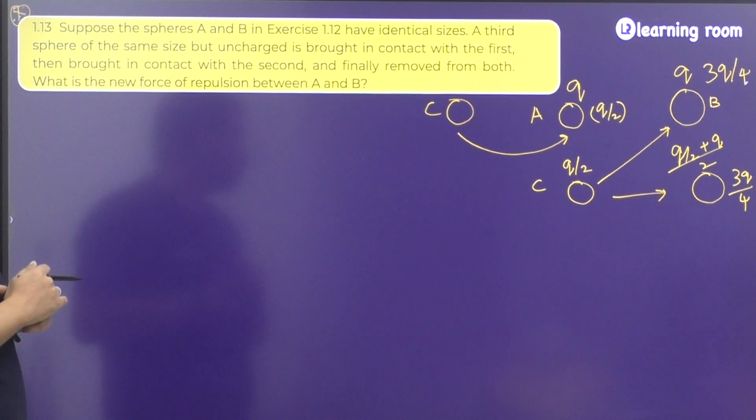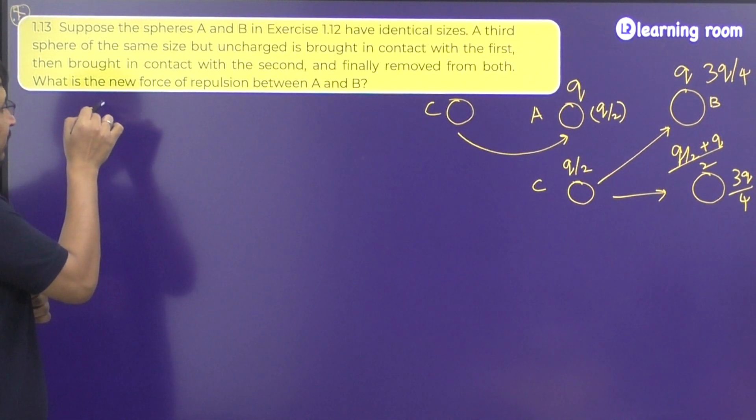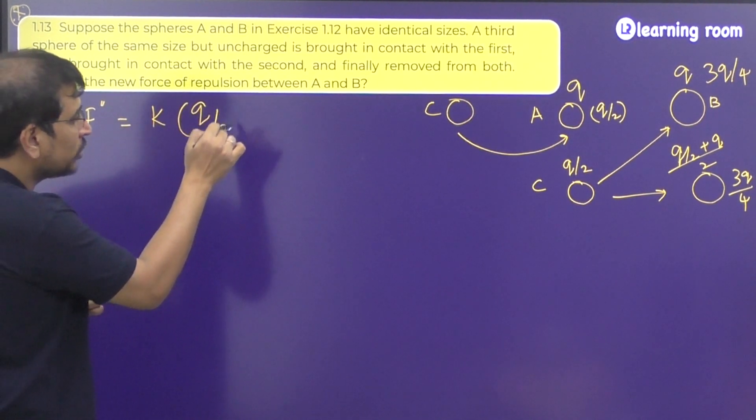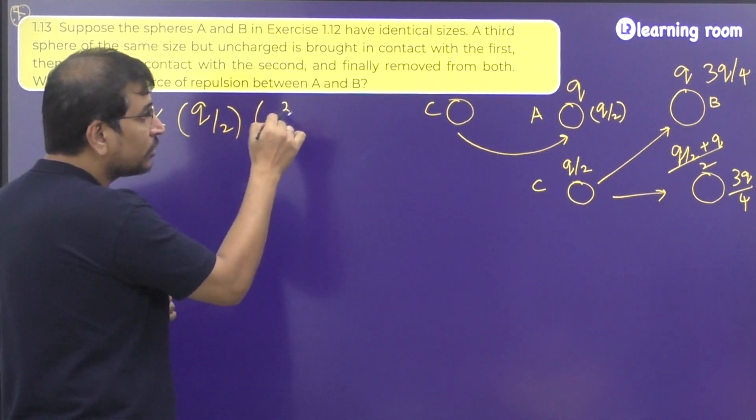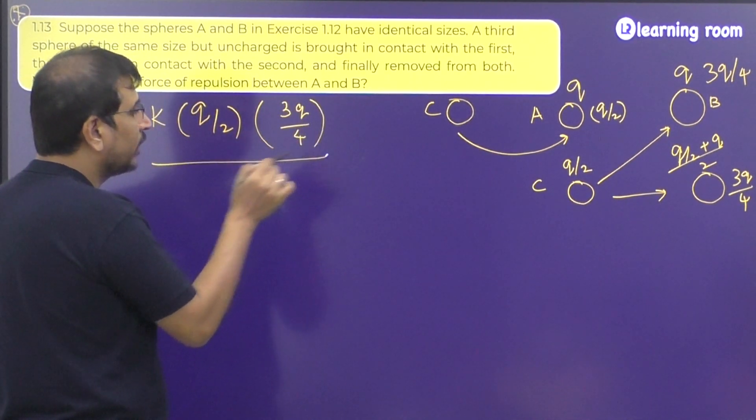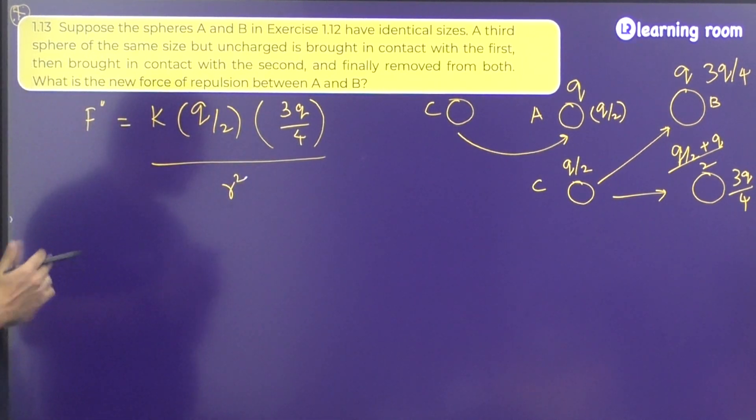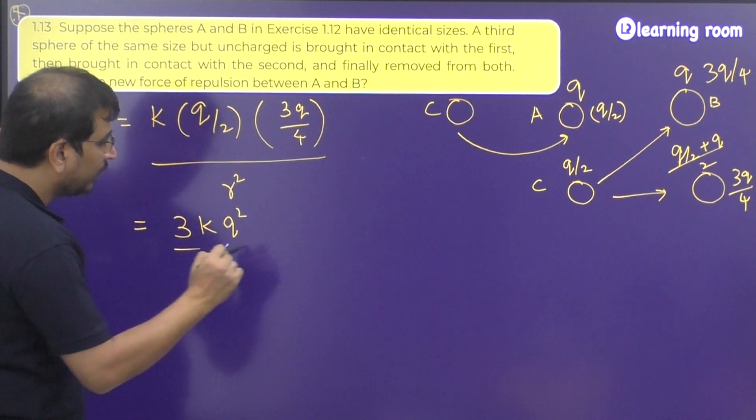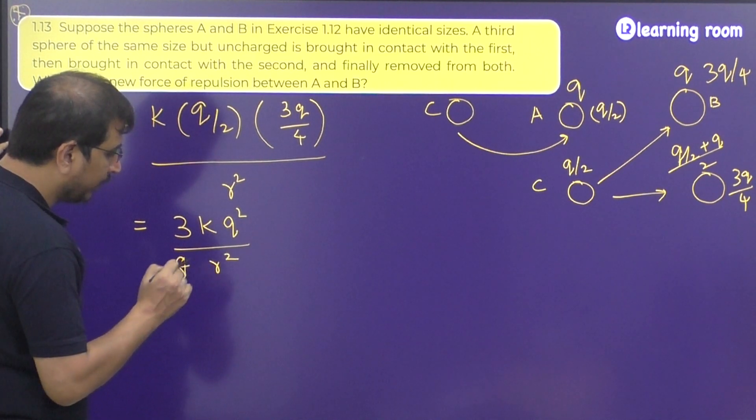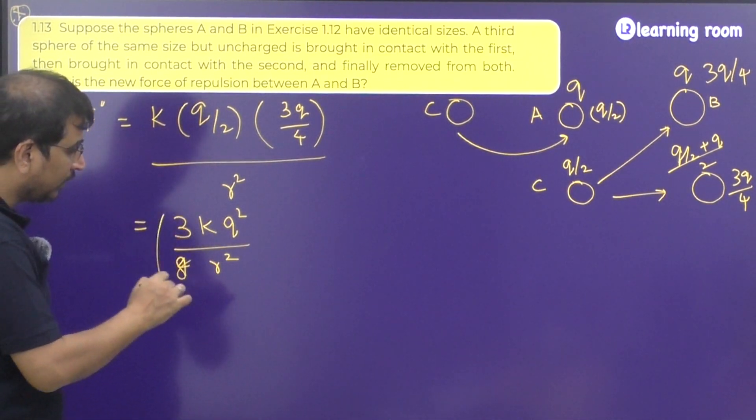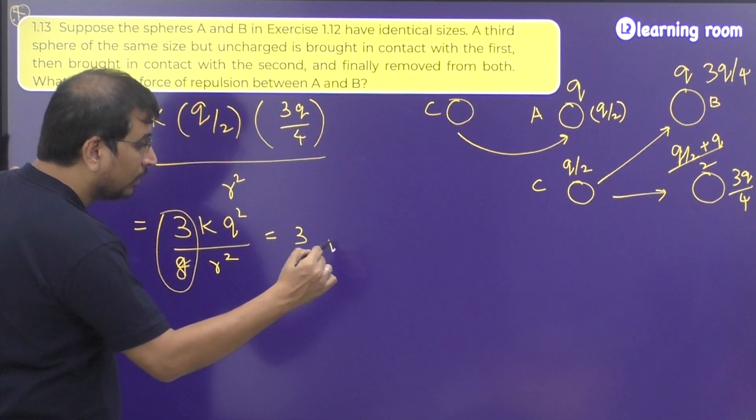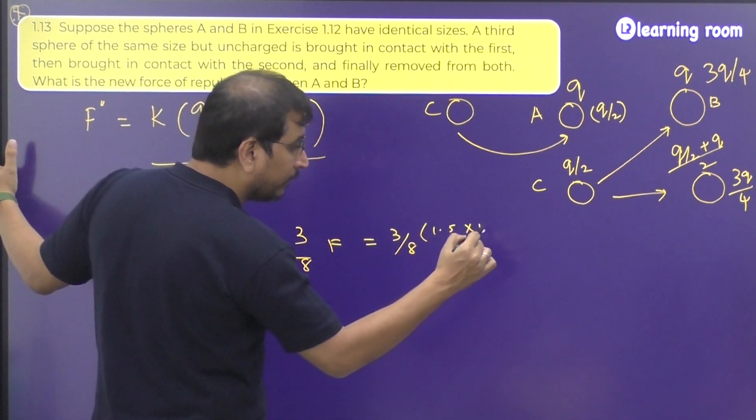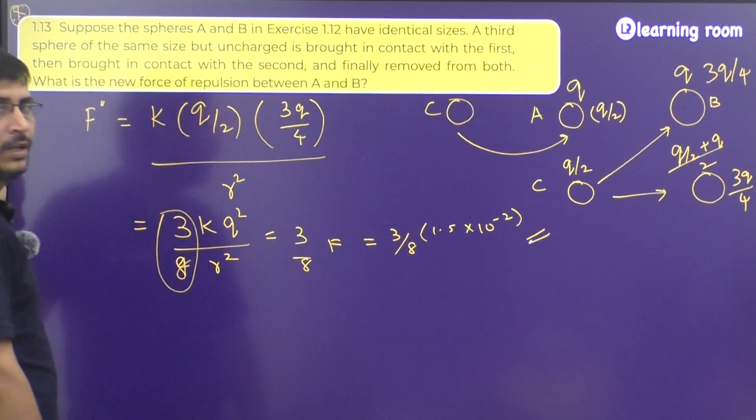So what is going to be the new force of repulsion between them? If I call it as F double dash, then it is going to be K multiplied with the new charge Q by 2 on A and the new charge 3Q by 4 on B the whole divided by R square. Distance is the same. So this is going to be 3 times K Q square divided by 8 times R square. So it is becoming 3 by 8 times F. So it is going to be 3 by 8 multiplied with 1.5 into 10 power minus 2. When you calculate this, that will be the required answer.